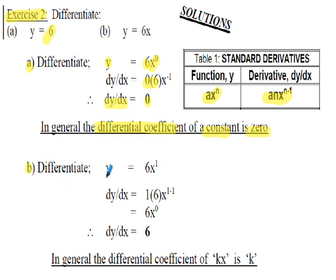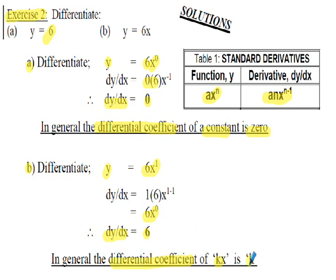Part b: differentiate y = 6x. Writing this as 6x¹ to give the form ax^n: differentiating gives 1×6=6, and x^(1−1)=x⁰=1, so dy/dx = 6. In general, the differential coefficient of kx is k.